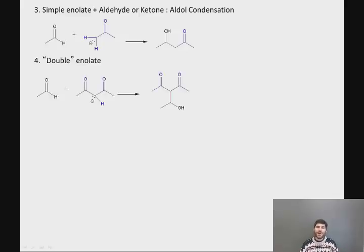You can do a similar reaction with a double enolate. You can add that central carbon with the negative charge on it to an aldehyde, and you get a structure as shown. In both of these structures, the new carbon-carbon bond that's being formed in this reaction is shown in red.